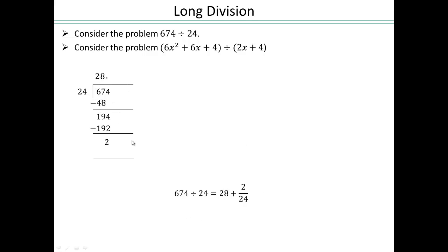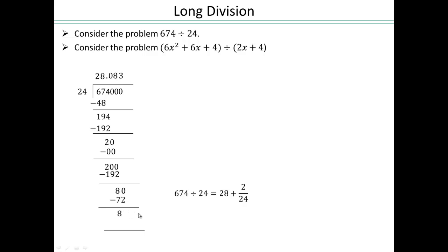We can also keep going making a decimal. So I can put a 0 here and a point there, and bring the 0 down. 24 times nothing is going to give you 20, so it will be 0. Then we can pull another 0 down. So 200 — times 8 again, which is 192. Subtract, get an 8. So another 0 down here, 24 times 3 gives you 72. It repeats, so another way to write this would be 28.083 repeating, with the bar just on the head of the 3. That's the decimal number division if you wanted to keep going and get a repeating decimal.